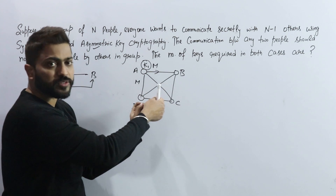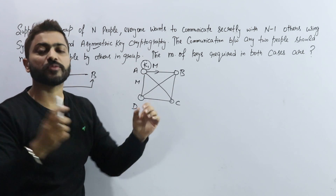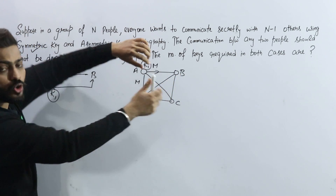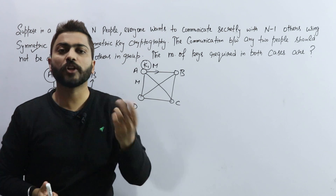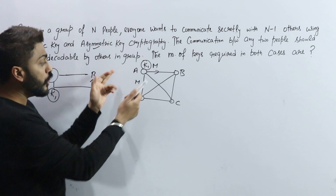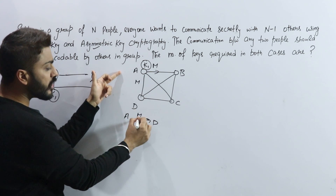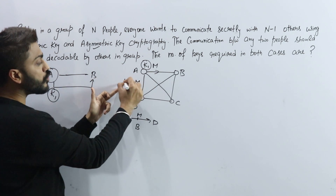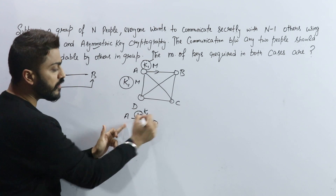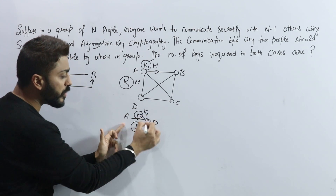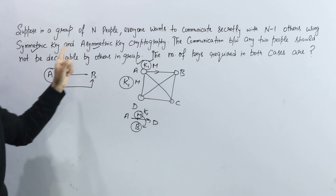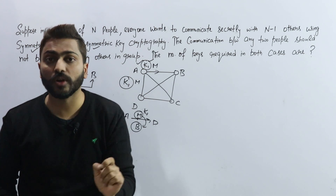In the diagram it may look like messages go point to point, but in wireless or wide communication, we use multipoint communication where multiple devices share the same medium. So if A sends a message to D, B can intercept it on the way. If A used the same key K1 for both B and D, then B can decode A's message to D — which violates our requirement that no one in the group can decode others' messages.